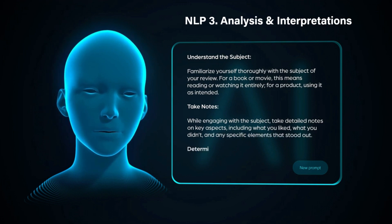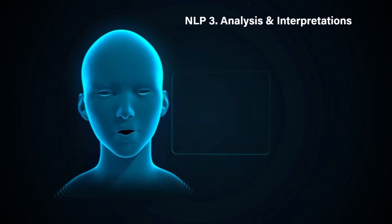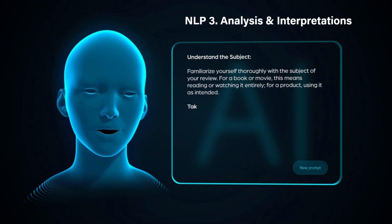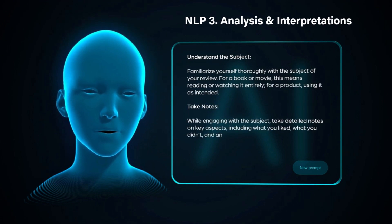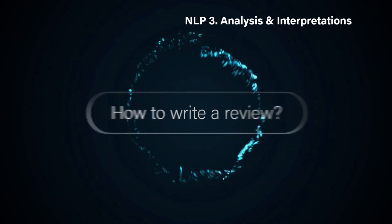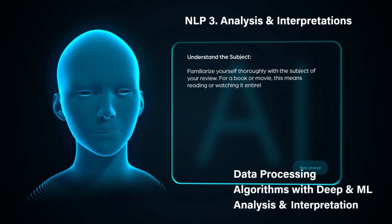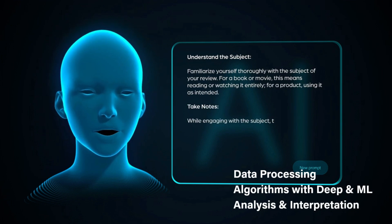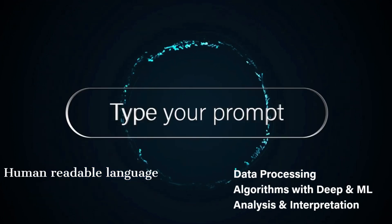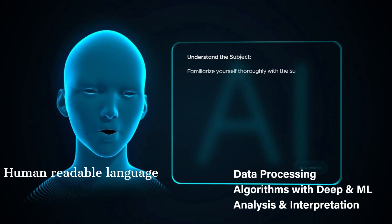The main aim of NLP is to process information similarly to how humans communicate with each other, by combining computational linguistic techniques along with the three methods: data processing and preparation, algorithm development with deep and machine learning, and analysis and interpretation. With this, NLP is able to process information in a human-readable language.